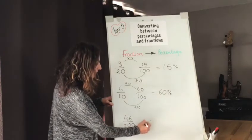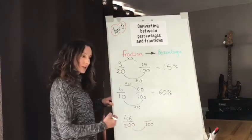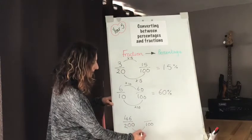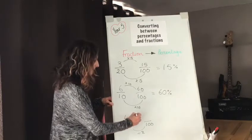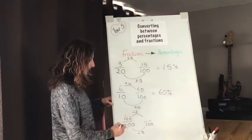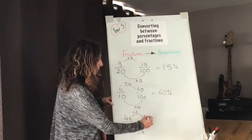So to get from 200 to 100 I know that I have divided by 2 so I will need to do the same to my numerator. 46 divided by 2 is 23.